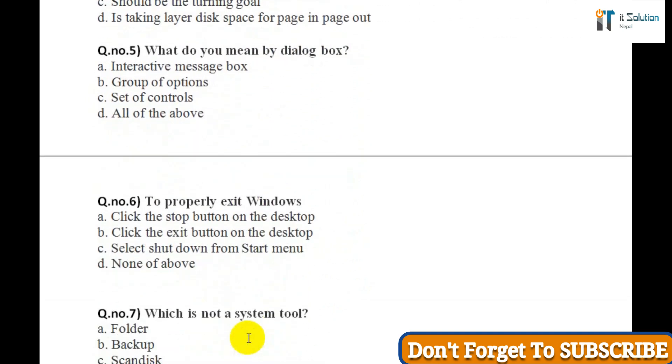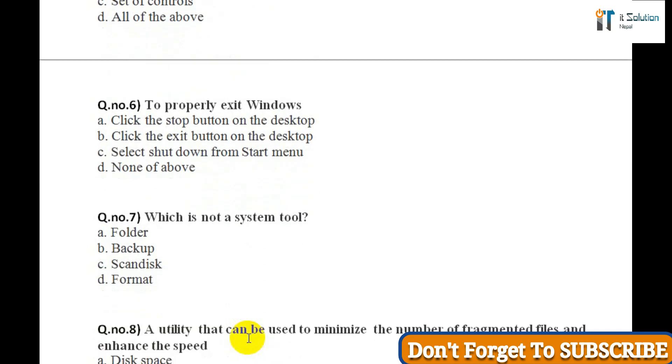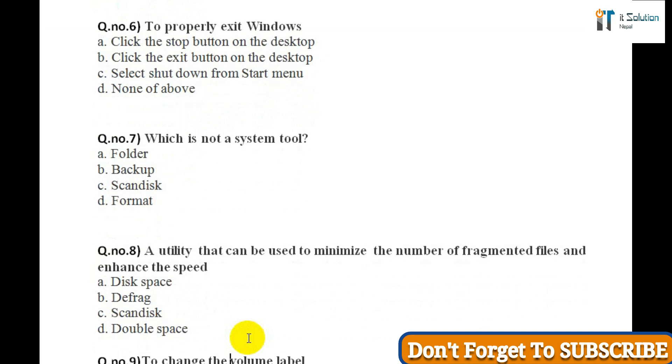C) Set of controls, D) All of the above. Question six: To properly exit Windows: A) Click the stop button on the desktop, B) Click the exit button on the desktop, C) Select shutdown from the start menu, D) None of above. Question seven: Which is not a system tool? A) Folder, B) Backup, C) Scandisk, D) Format.